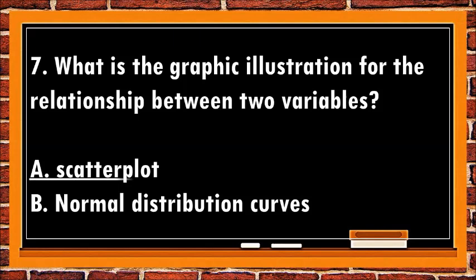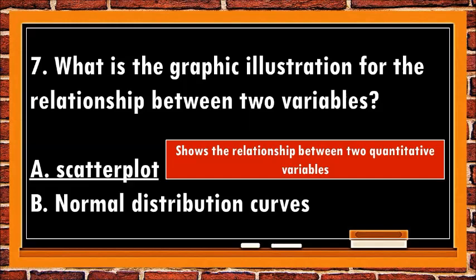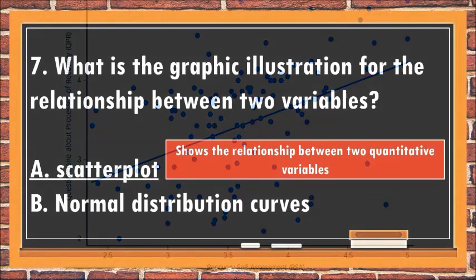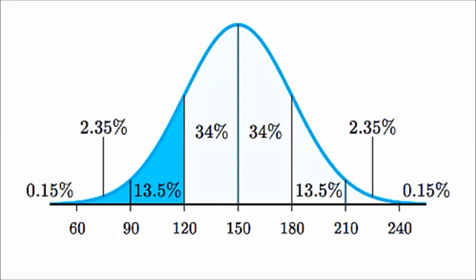The best answer is a. Scatterplot. A scatterplot shows the relationship between two quantitative variables measured for the same individuals. The values of one variable appear on the horizontal axis, and the values of the other variable appear on the vertical axis. While the normal distribution curve represents probability and the total area under the curve sums to one.